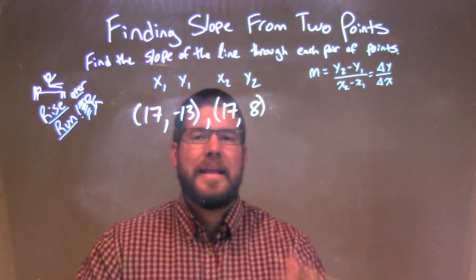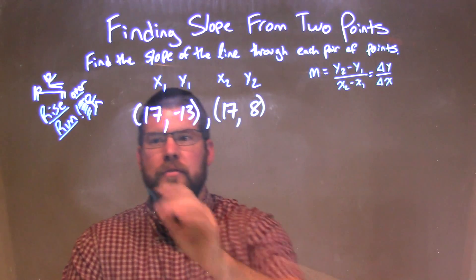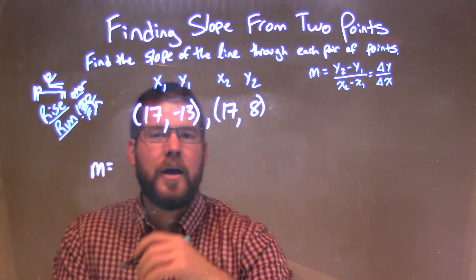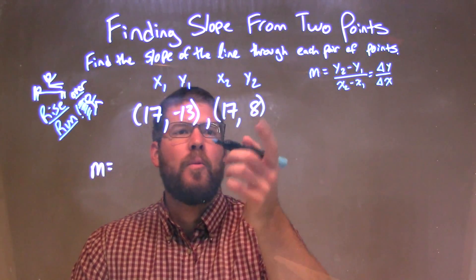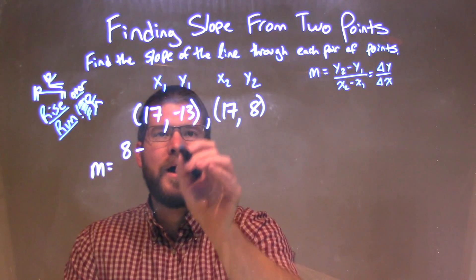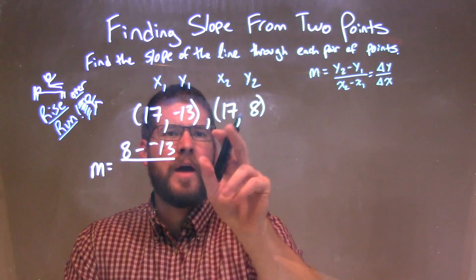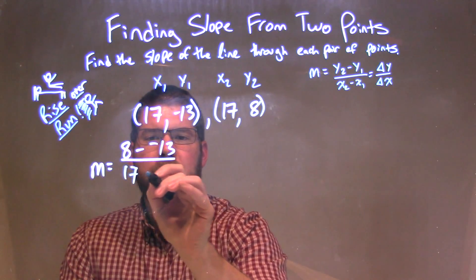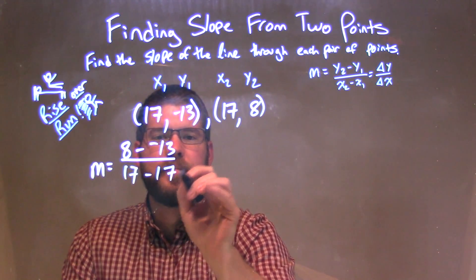So there were two points there, and so I need to follow my slope formula. So my slope here, my y2 minus y1 over x2 minus x1, y2 being 8, minus y1, which is negative 13, over x2, 17, minus x1, 17.